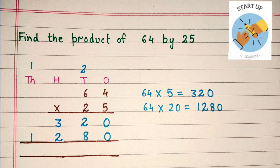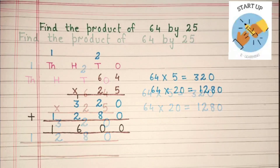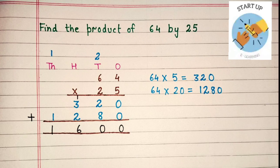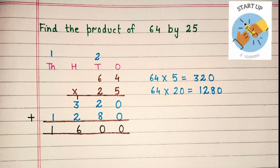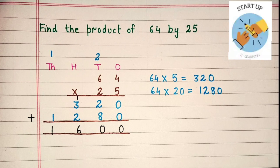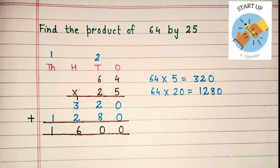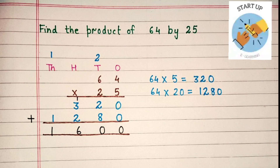Now, we will add these two partial products to get the final product. Let's start adding them from the 1's place. 0 plus 0 is equal to 0. 2 plus 8 is equal to 10 — 1 will be carried on. 3 plus 2 is equal to 5, plus 1 carry over, is equal to 6. 1 plus nothing is equal to 1. So, 1600 is the final product here.